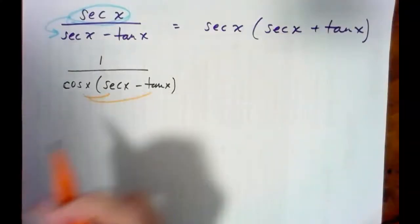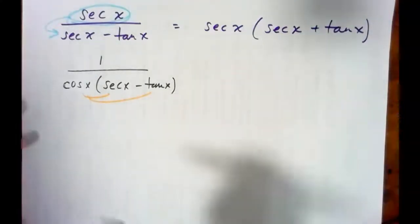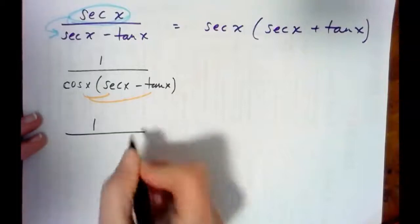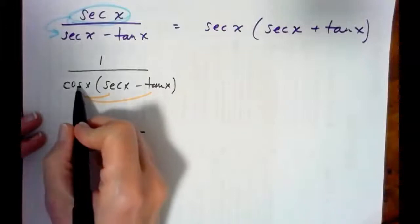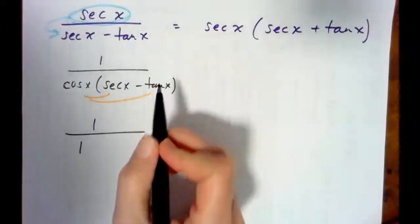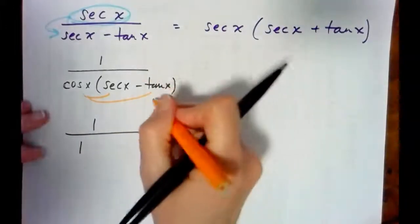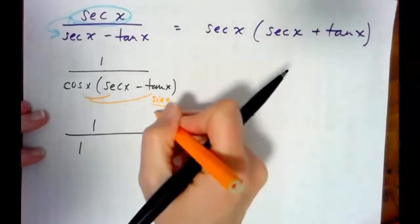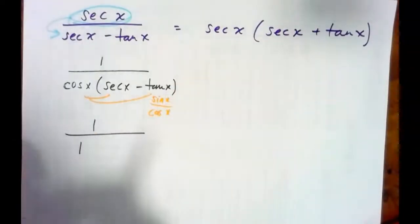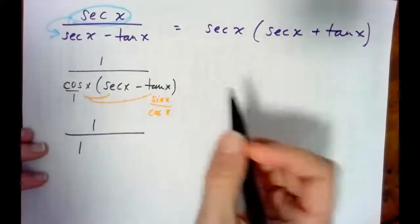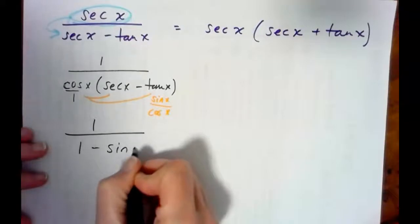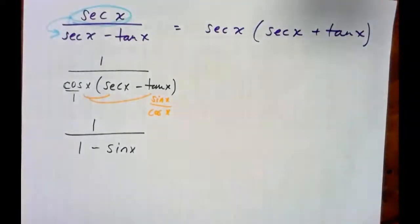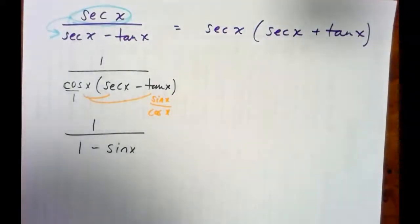Using the distributive property, cosine times secant is 1. And cosine times tangent — remember, tangent is sine x over cosine x — so cosine over 1 times sine over cosine: the cosines cancel and we end up with 1 over 1 minus sine x. So that is our left-hand side.